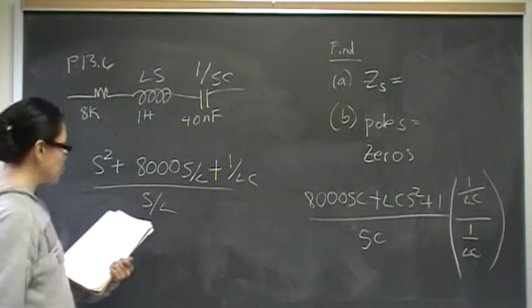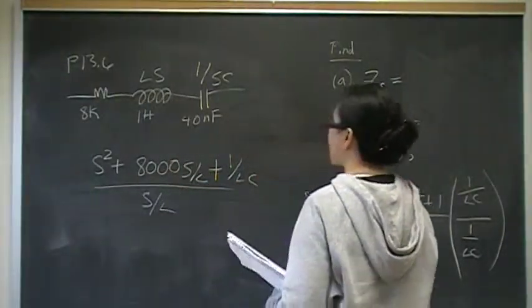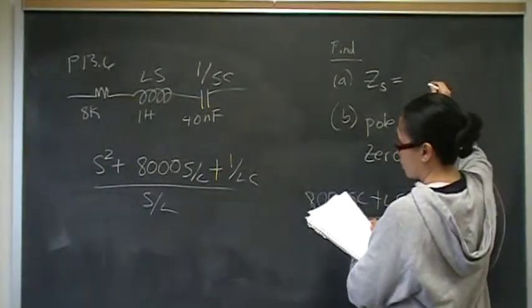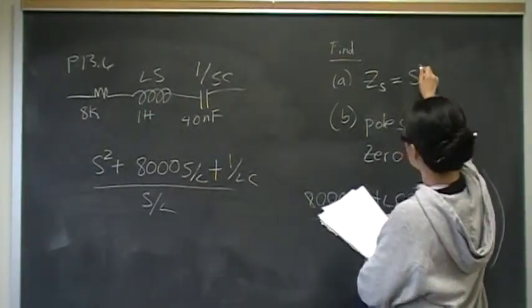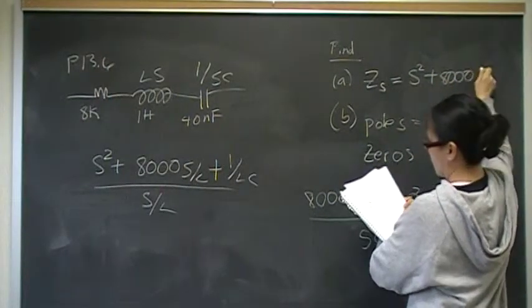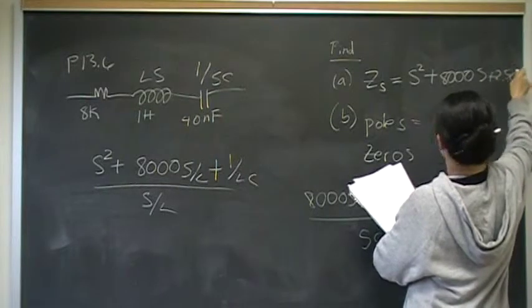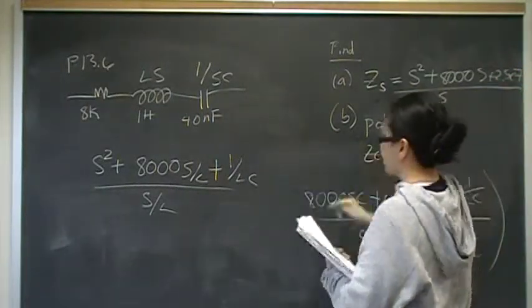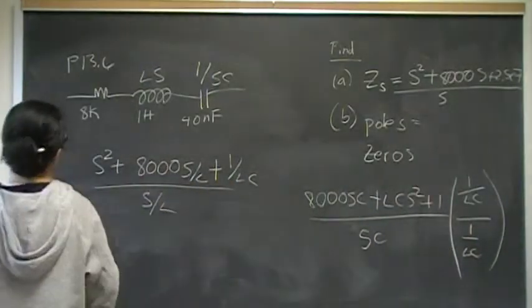When you plug in the actual numbers, the 1 Henry and the 40 nanos, you should come up with an equivalent of S squared plus 8,000 S plus 2.5E7 over S. And that is the answer for part A.